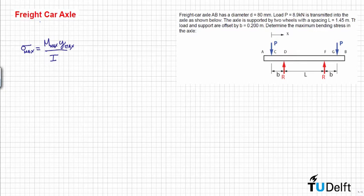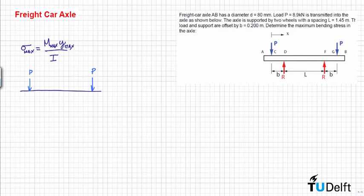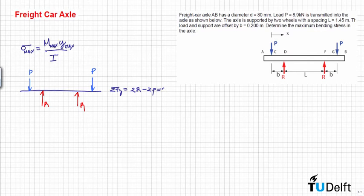We start by calculating the reaction forces. This is our structure, and we have the applied force P and the applied force P here as well, along with the reaction forces R. From vertical equilibrium we have 2R minus 2P equals 0, and since we have symmetry, we directly find that R is equal to P.